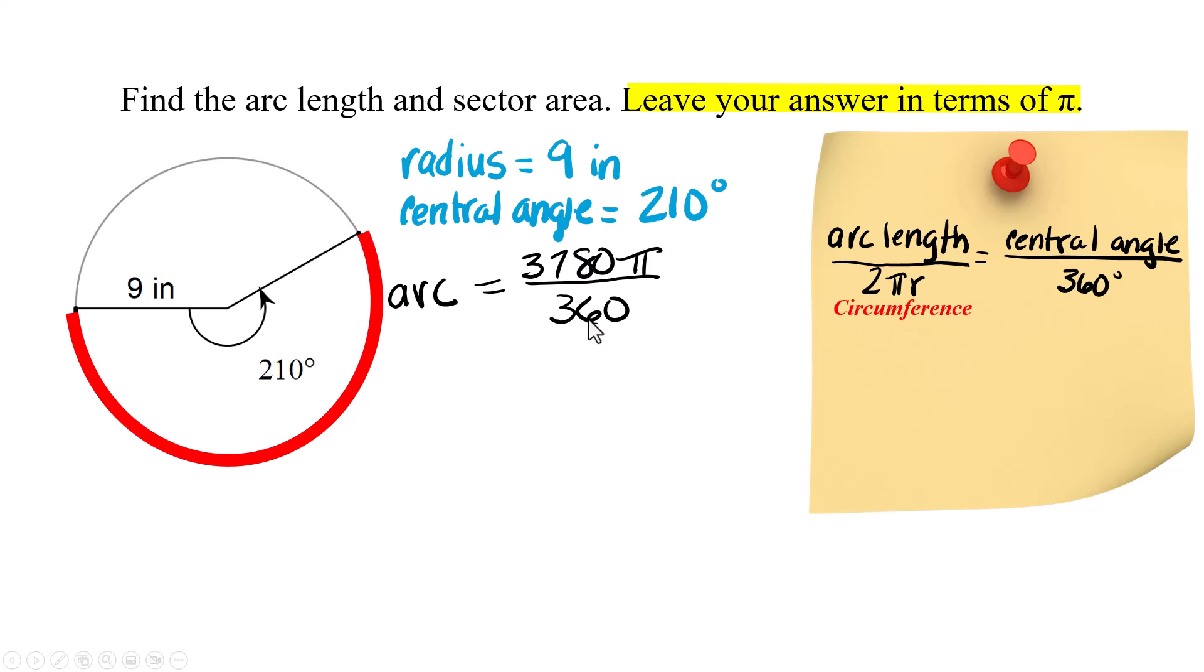Like if I take the top and divide it by 10 and I take the bottom and divide it by 10 it's like canceling the zeros. So I end up with 378 over 36.